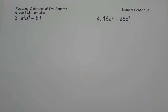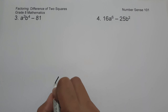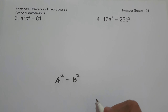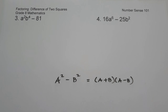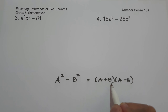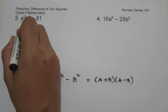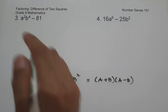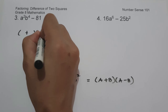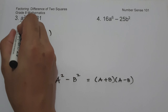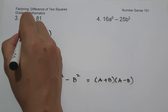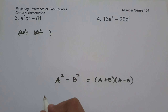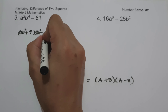On example number three, we have a squared times b raised to the 4th minus 81. The given expression is written in the form of a squared minus b squared, so the factored form is the product of the sum and difference of two terms. The square root of a squared is a, the square root of b raised to the 4th is b squared (dividing 4 by 2), and the square root of 81 is 9. So the factored form is quantity a plus b squared times quantity a minus b squared minus 9, and this will be our answer.